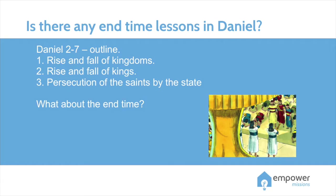Usually the main thought would be in the center, but not always — it's the thing they wanted to focus on. It can be A, B, C, C, B, A, and so on. You find this a lot in Psalms. In Daniel chapters 2 to 7, you find a big chiasm.